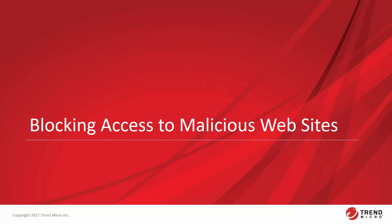The Deep Security Anti-Malware Protection Module protects servers against malware by scanning the system on a regular basis looking for evidence of malware infection. Another method of protecting servers from malware is to prevent devices from accessing websites that have the potential for distributing malware. In this video lesson, we will enable and configure the Web Reputation Protection Module to protect servers by blocking access to malicious URLs.